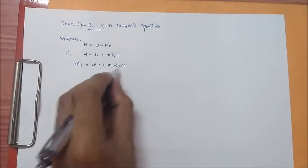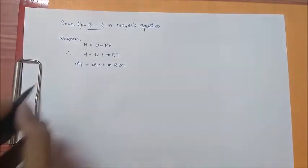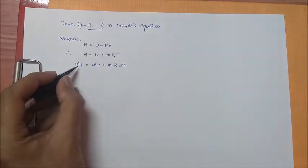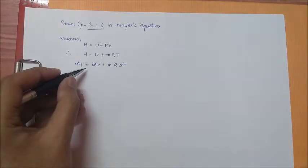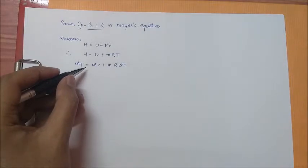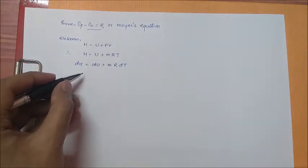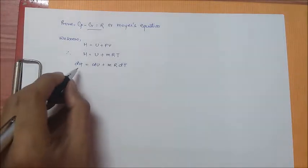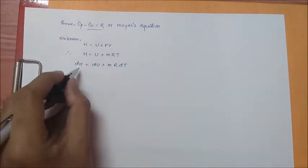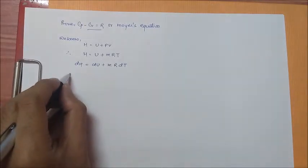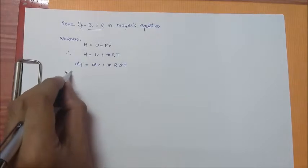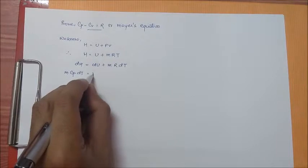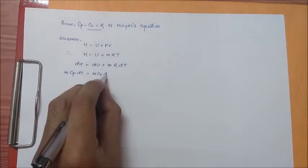And from constant volume and constant pressure, we know that dH is equal to m cp dT and dU is equal to m cv dT.